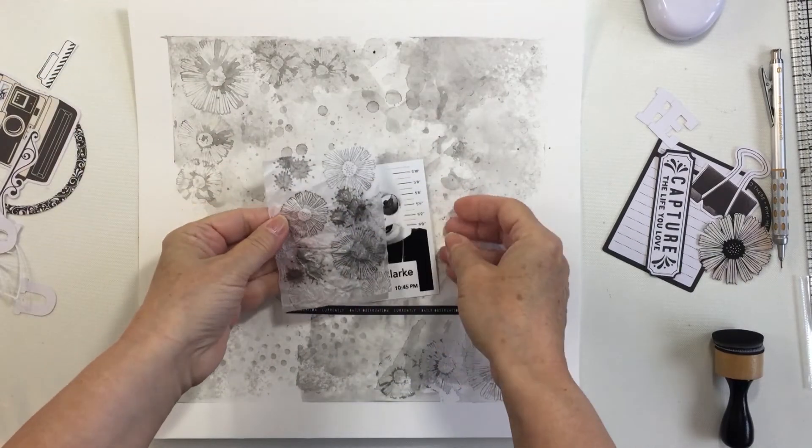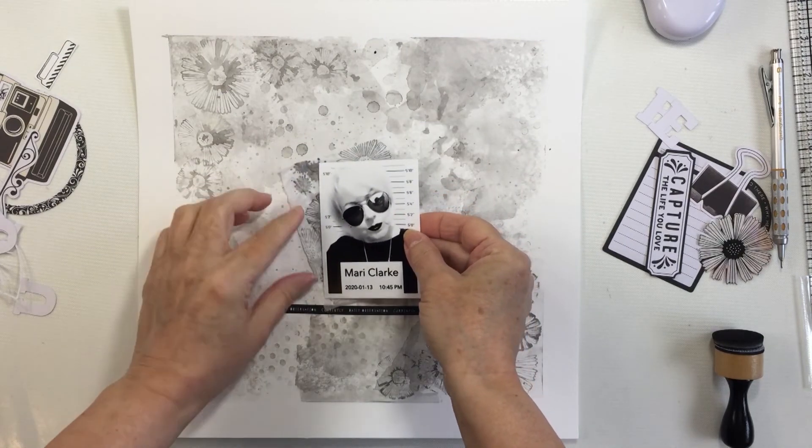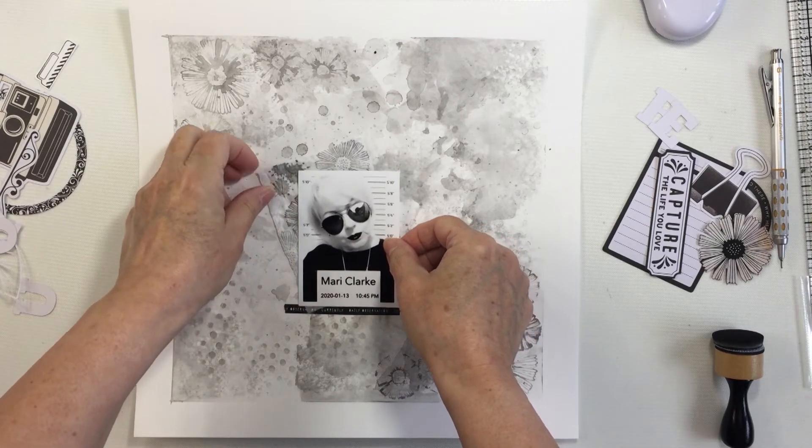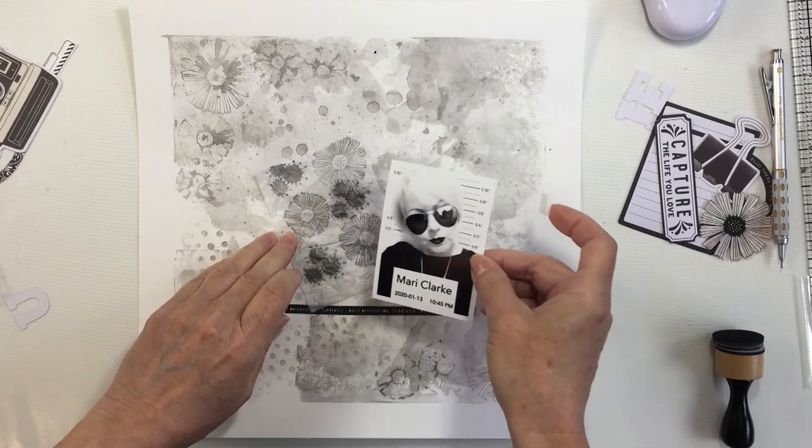I've also taken a little strip of the washi tape from Color Study, this is the black thin skinny washi tape, and I'm using that as a holding spot, a place to like a little ledge for my photo.